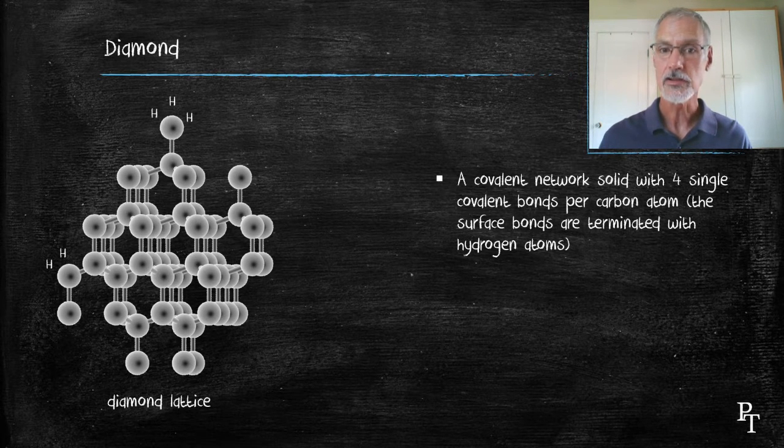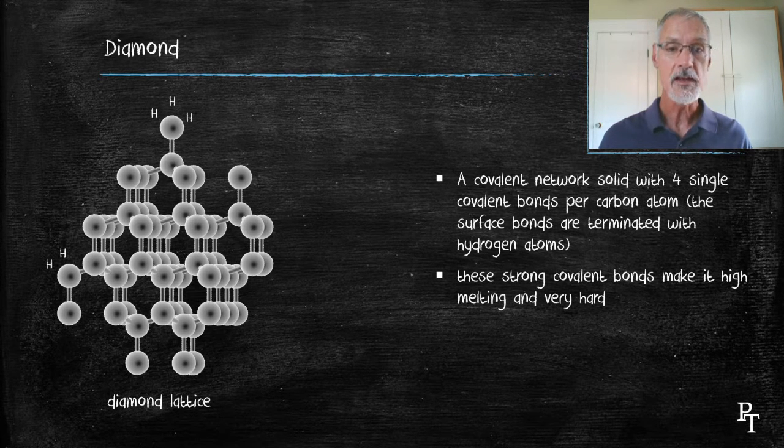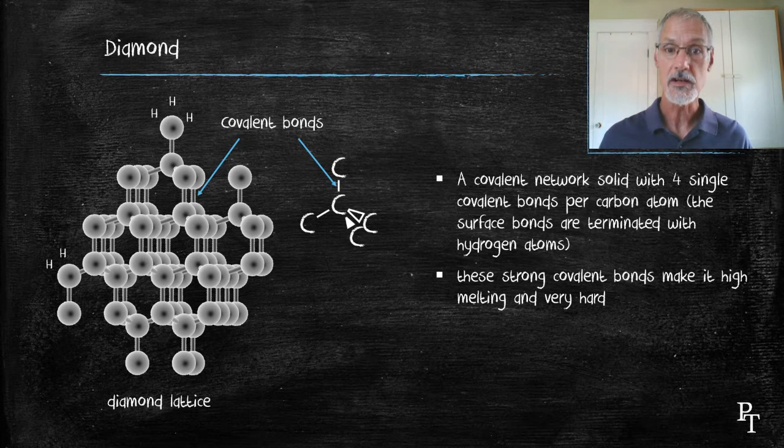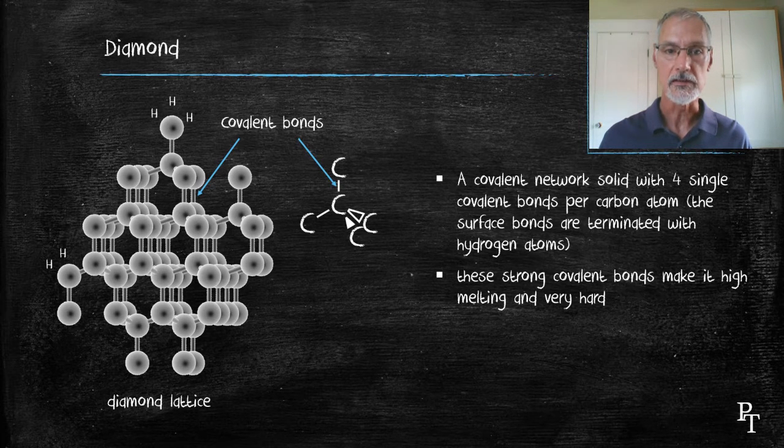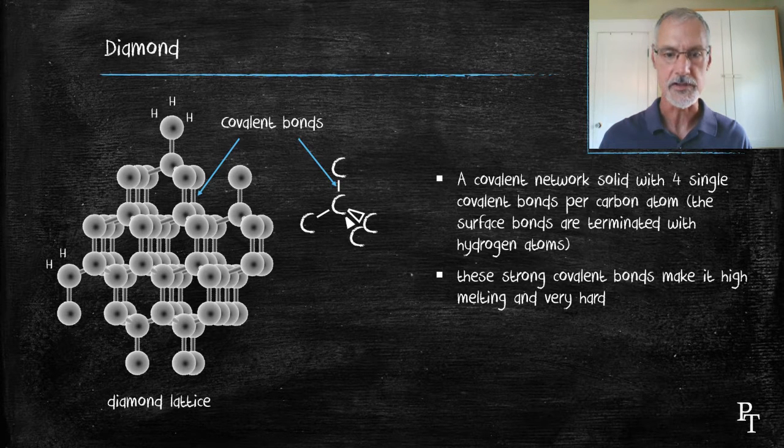But internally, it's all carbon covalently bonded to carbon. Now, these covalent bonds are quite strong. As a result, it leads to the fact that diamond is quite hard and has a very high melting point. Every single bond has a locked pair of electrons in the covalent bond, all arranged in the tetrahedral structure.